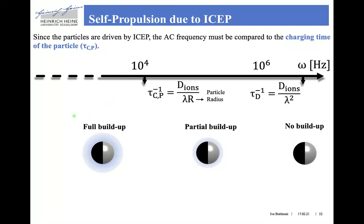Analogously to what we've seen before: if the operating frequency is smaller than the inverse of the charging time of the particle — here we have the particle radius — we have a full build-up of the electrical double layer. At frequencies comparable to the charging time, we have a partial build-up. If the frequency is much larger than the charging time and becomes comparable to the inverse of the typical diffusion time of ions across the bilayer thickness, then we have no build-up at all and therefore no self-propulsion.